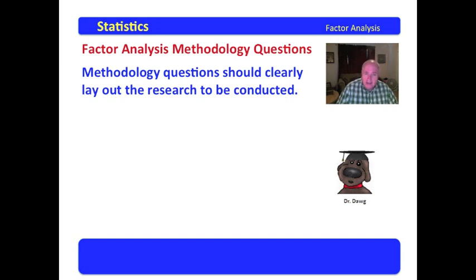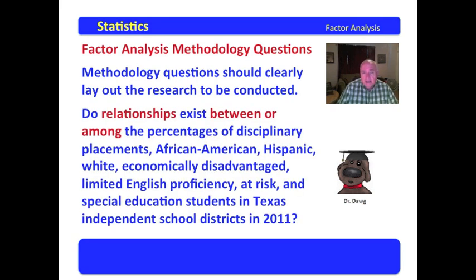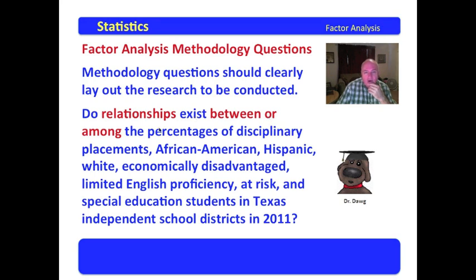Methodology questions should clearly lay out the research to be conducted. Here's the question: Do relationships exist between or among the percentages of disciplinary placements, African American, Hispanic, white, economically disadvantaged, limited English proficiency, at-risk, and special education students in Texas Independent School Districts in 2011? Note: 'do relationships' — plural — exist. We said 'between or among,' not just 'between,' because there are two or more variables. That's important to know. Good research question.